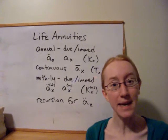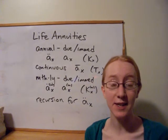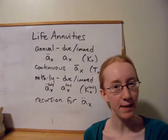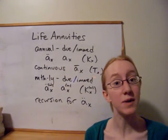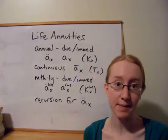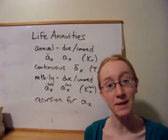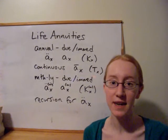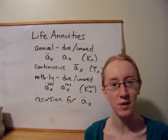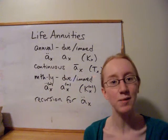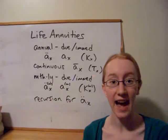In the case of an annuity immediate, that's where the payments are made at the end of each year. So the first payment would be made at time 1, but the last payment would also be made at time kx, not time kx plus 1, because the annuitant must be alive to receive the payment. So in fact, the only difference between those two cases, due and immediate, is whether or not there's a payment of $1 at time 0.